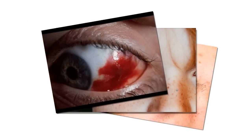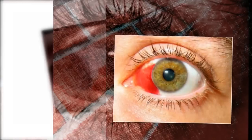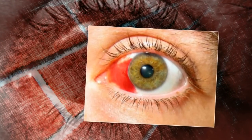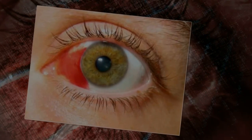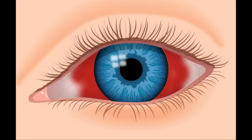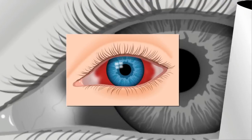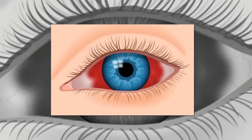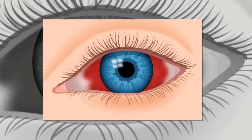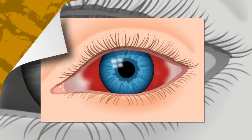The most common hemorrhages occur in the sclera, the white portion of the eye under the clear membrane. Numerous tiny blood vessels beneath this membrane, called the conjunctiva, are so fragile they can break easily under slight pressure. An instance of bleeding in the sclera beneath the conjunctiva is called a subconjunctival eye hemorrhage. These hemorrhages are generally harmless and resolve themselves without treatment in a day or two.